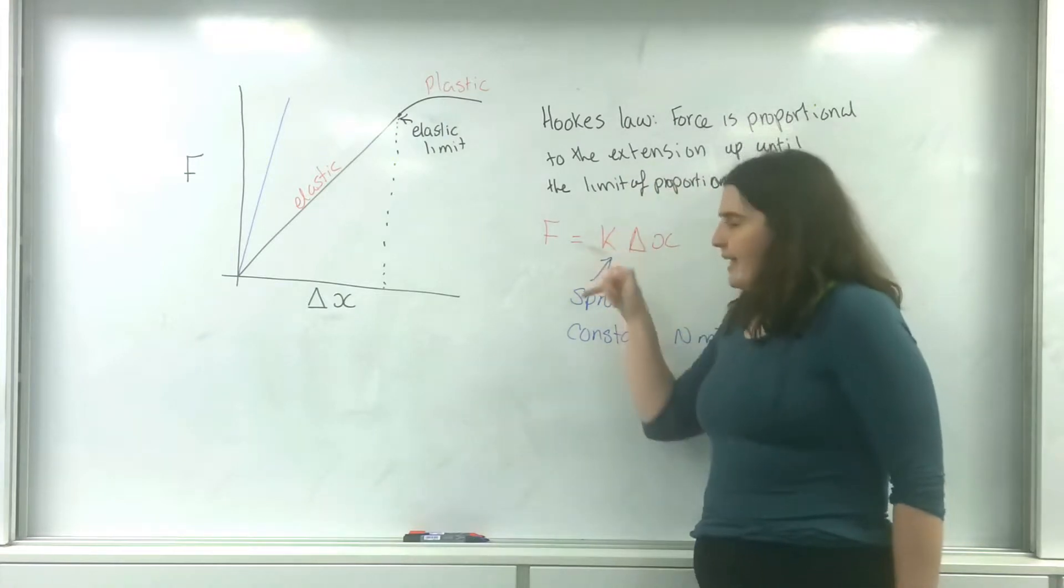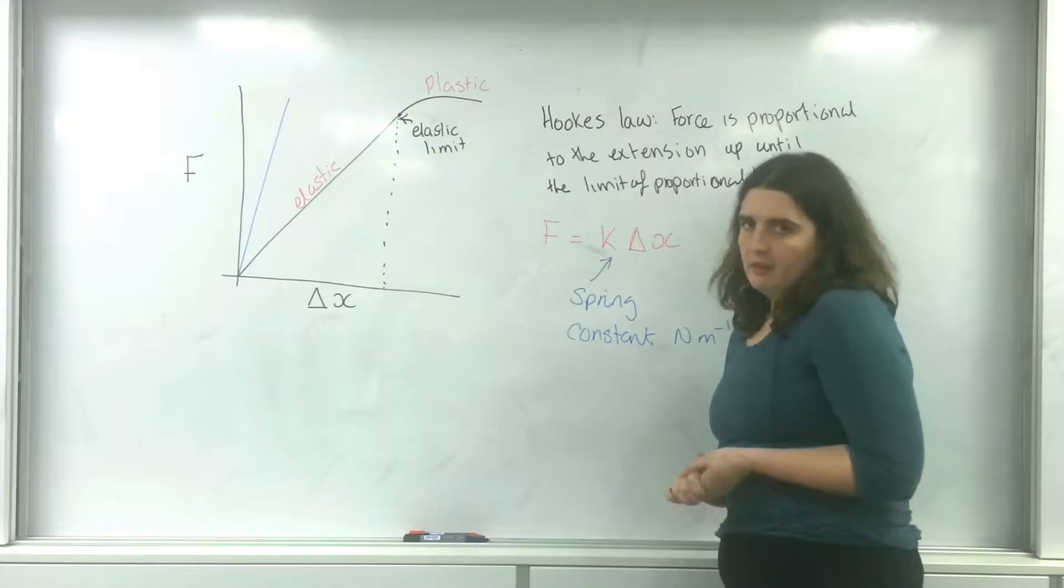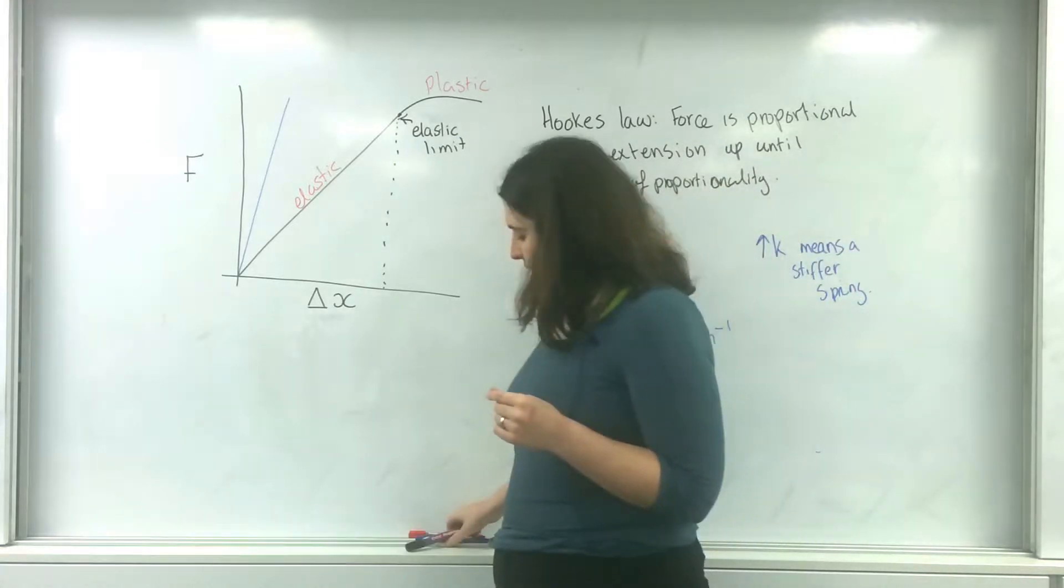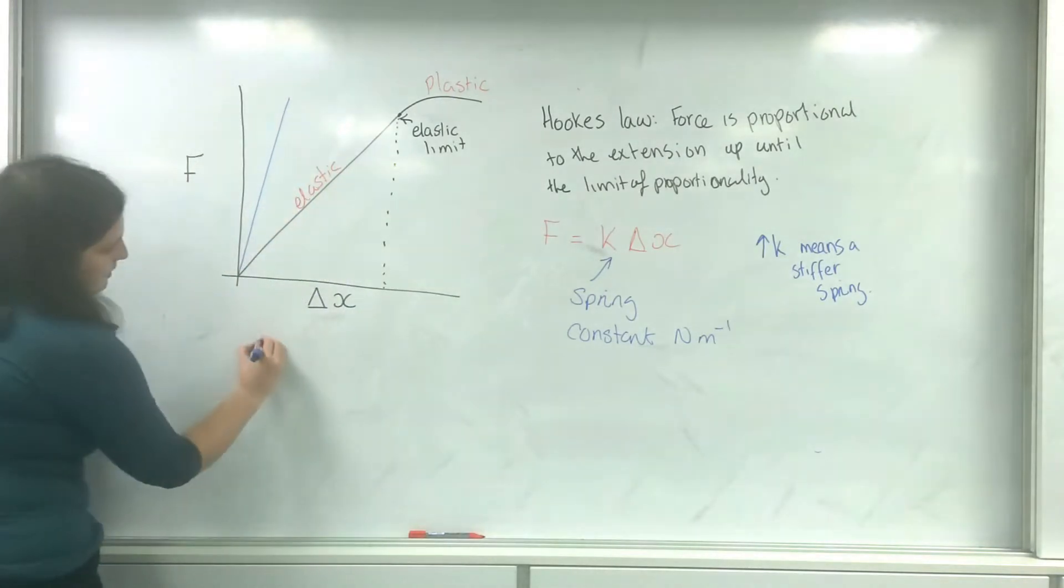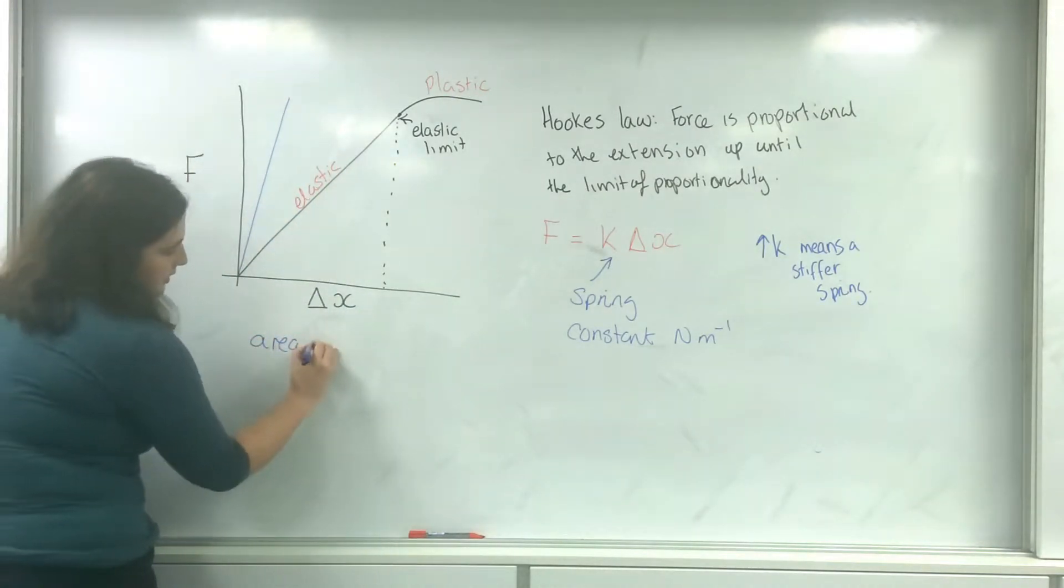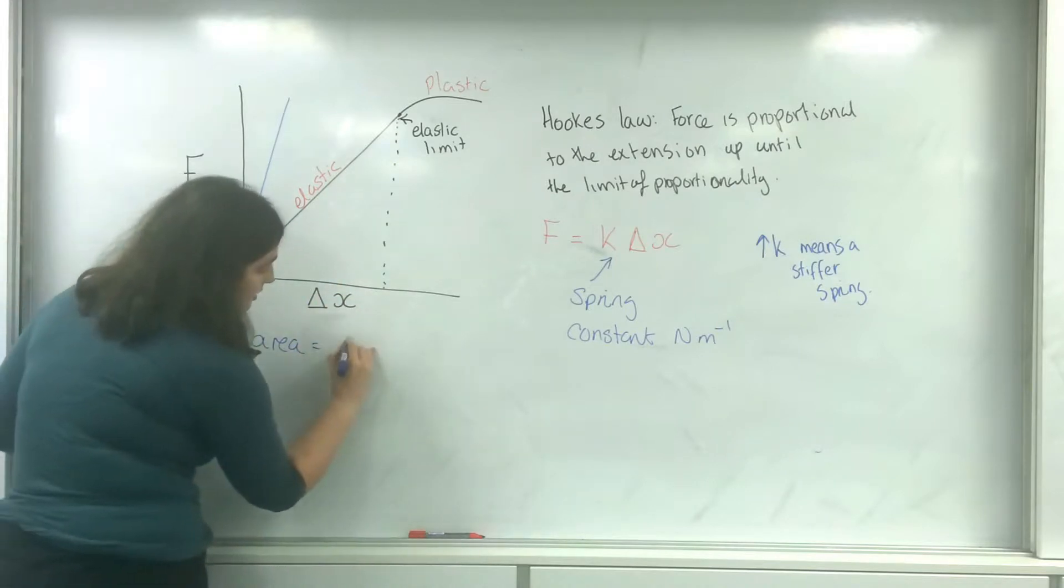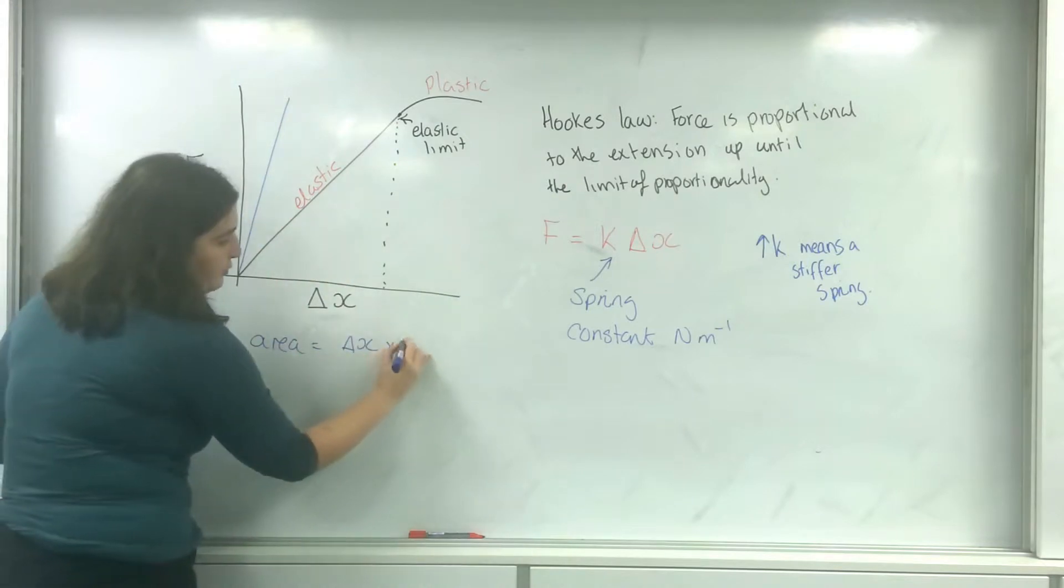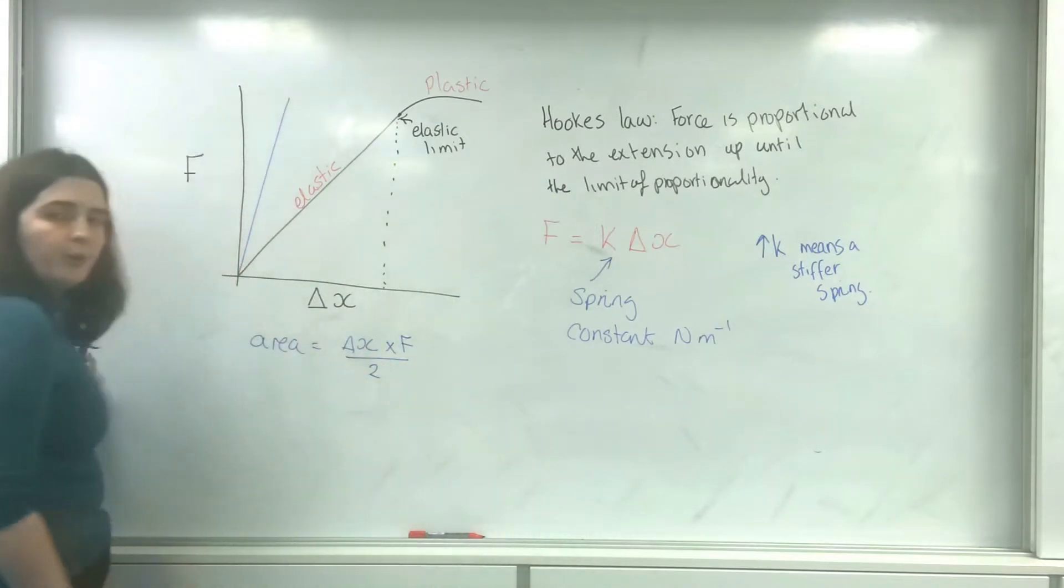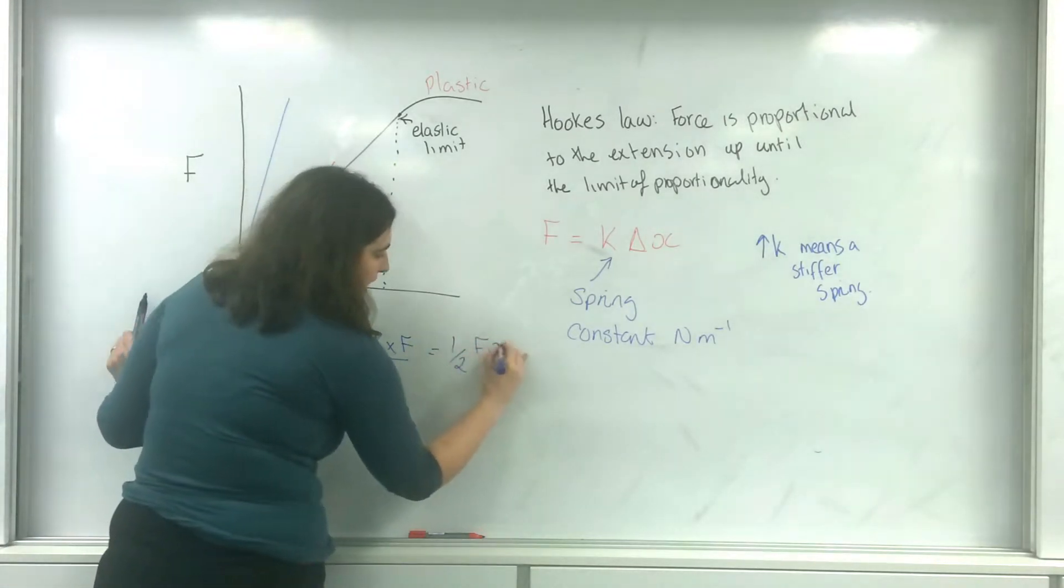Now this k is from the gradient of that line. Now the area, let's have a look at it. The area under this graph is the extension times by the force divided by 2, or a half fx.